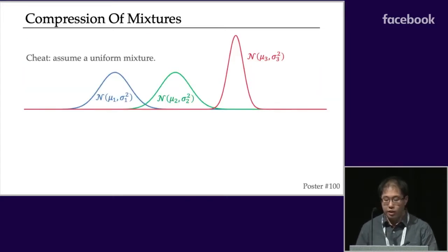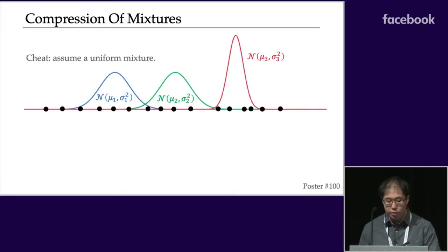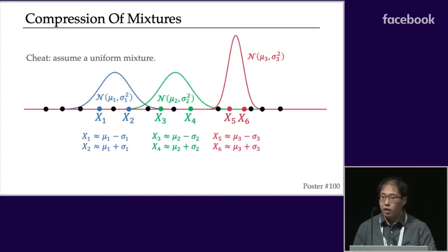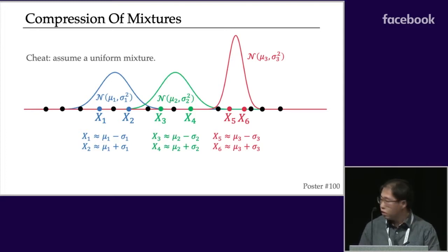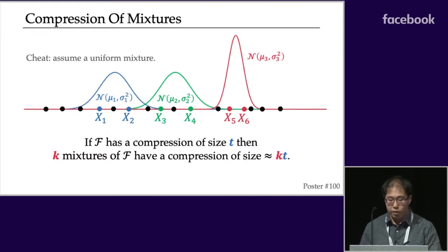A nice property of compression is that it extends nicely to mixture distributions. For example, with a mixture of three Gaussians — all with different means and variances — we draw a small number of points. The main idea is that we already know how to compress each component, so we compress each component of the mixture separately. For each Gaussian we apply the two-point compression scheme, giving a compression of size six total. More generally, if class F has a compression of size T, that extends to a compression scheme for K-mixtures of F using about KT samples.